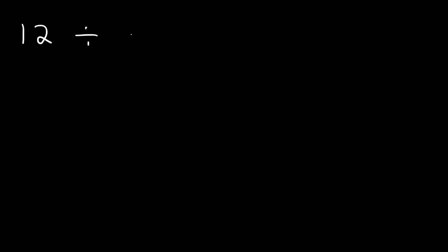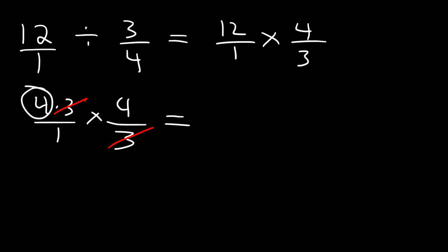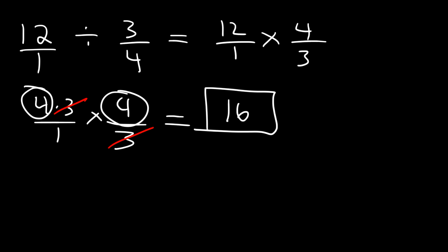Let's work on another example. Divide 12 by 3 fourths. Convert the whole number into a fraction by putting it over 1, then change division to multiplication by flipping the second fraction. Before multiplying across, we can simplify: 12 is 4 times 3, so we can cancel a 3. The final answer is just 4 times 4, which is 16 — a nice whole number, so no need to convert to a mixed number.